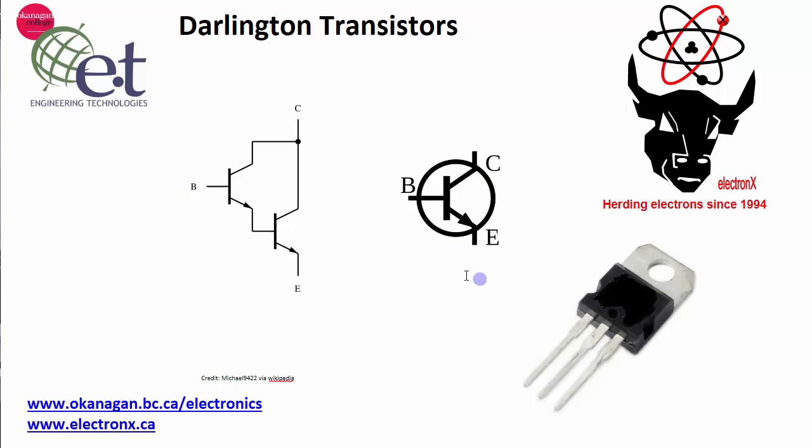Just like a regular NPN transistor here: base, collector, and emitter. The difference is internally there are actually two transistors cascaded together.